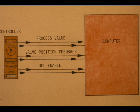In a typical DDC loop, the computer receives three inputs from the controller. The three computer inputs are process value, valve position feedback, and enable.